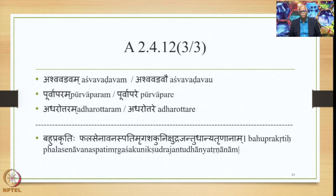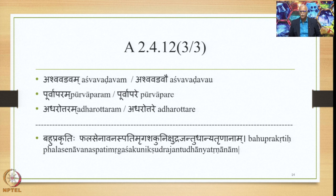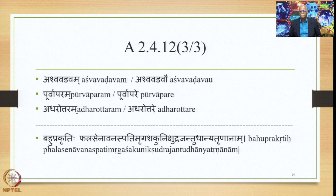There is a statement: Bahuprakritihi Phala, Sena, Vanaspati, Murgha, Shakuni, Kshudra Jantu, Dhanya, Trinanam. The Dvandhva Samasa which is Samahara Dvandhva takes place for fruits, the army and its limbs, trees, animals, birds, small species, food grain, and grass — only if the number of constituents which get compounded is many. If the number of constituents is not many but only two, then Samahara does not take place and only Itaretara Yoga then takes place.